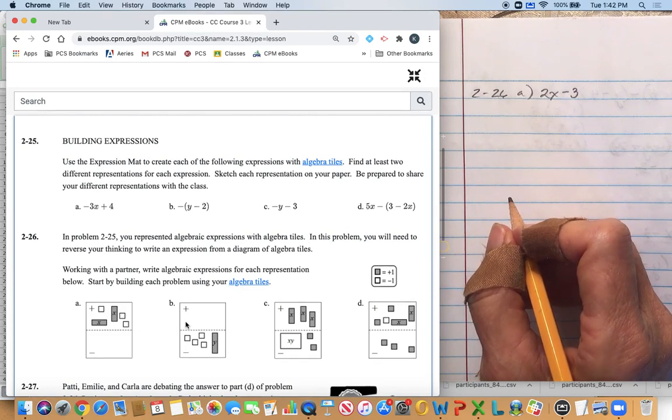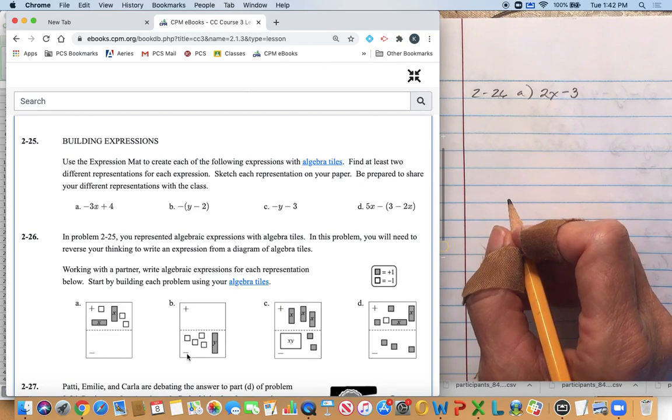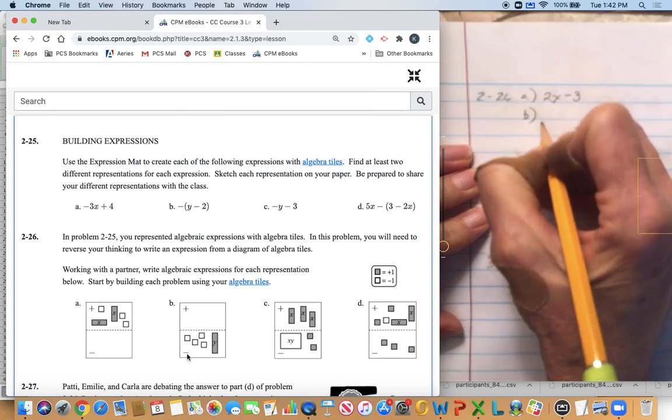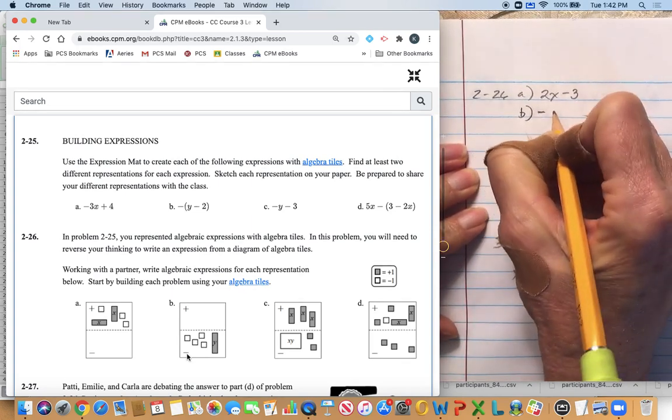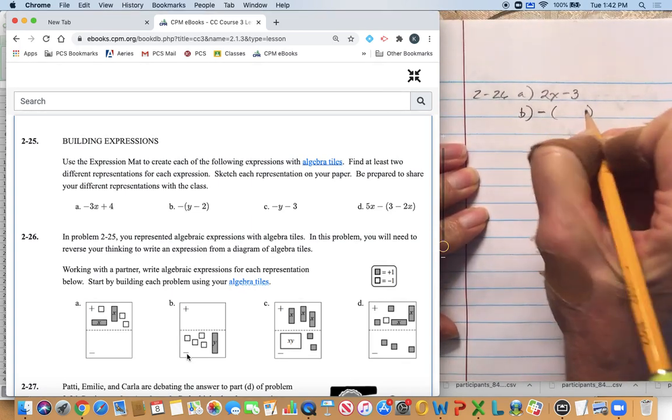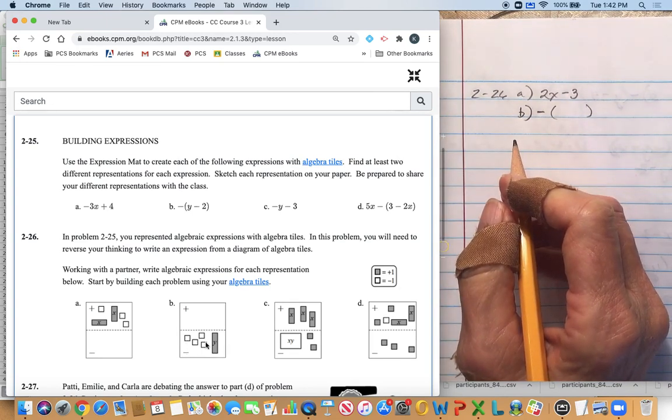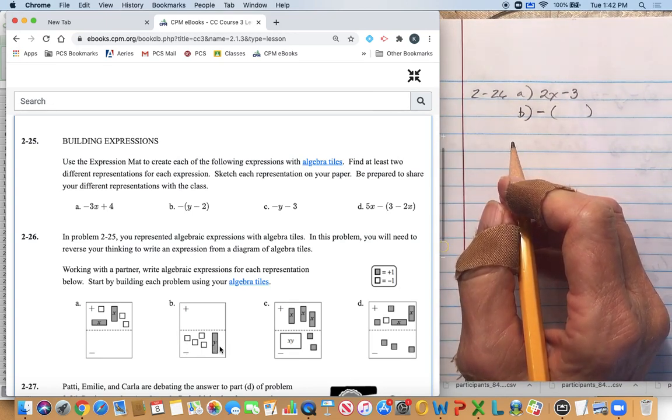Now for B, notice that all the tiles are down in the negative area, so what I do for that is I start out with a negative sign in front of parentheses and then I count up what's inside this area and look at its sign.